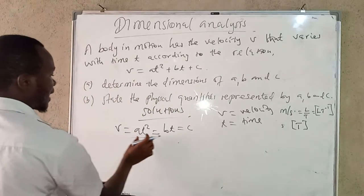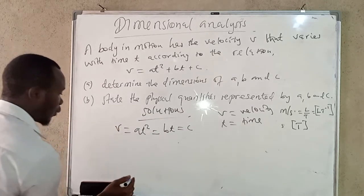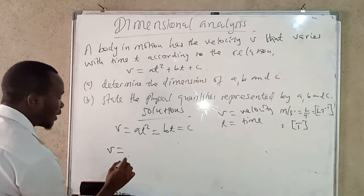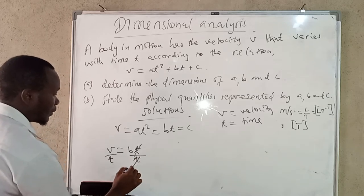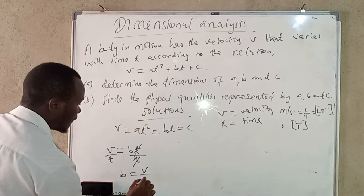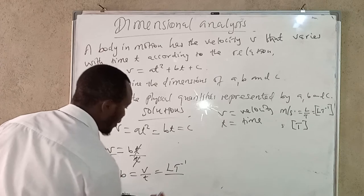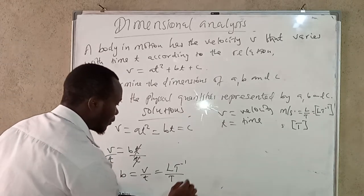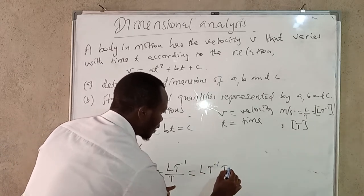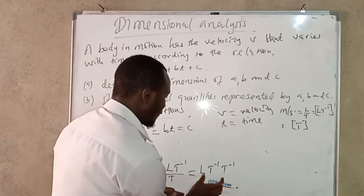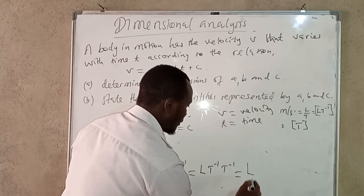For b, we equate the velocity dimensions to b·t, then divide both sides by t so that t cancels, giving b = v / t. In terms of dimensions, this is LT⁻¹ divided by T, which equals LT⁻², or meters per second squared. So b has the dimensions of acceleration.